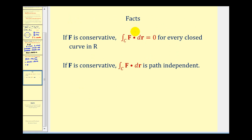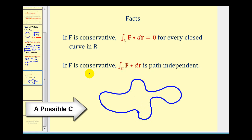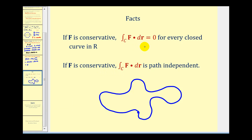By doing this problem, we've discovered that if F is conservative, the line integral equals zero for every closed curve. This makes sense because if F is conservative, the line integral is path independent — so if you start at a point and end at the same point along any path, the line integral will always equal zero. I hope you found this helpful. Thank you for watching.